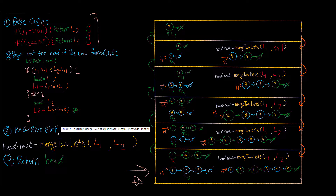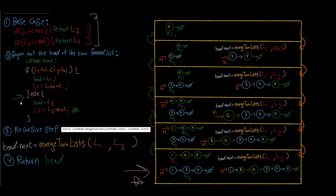List one has only node four and list two has nodes three and four. Neither is null. We make a head pointer — is list one dot value less than list two dot value? No, four is not less than three, so we go to else: head points to list two's node three. We advance list two, and then call the recursive step again with list two now pointing to four.